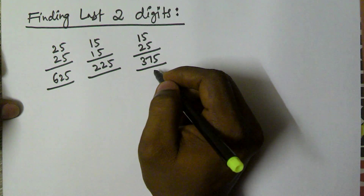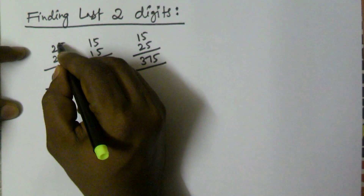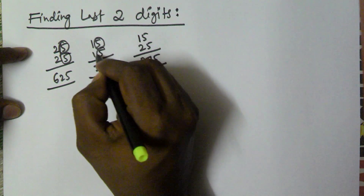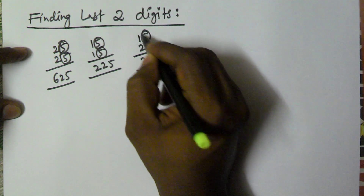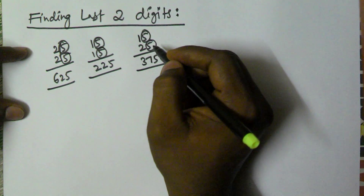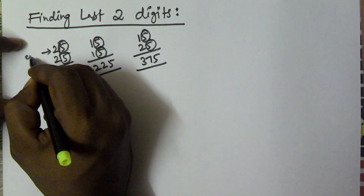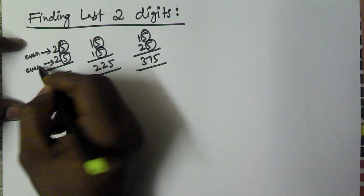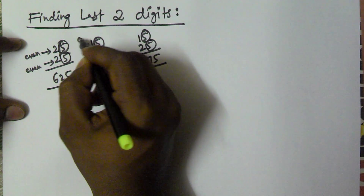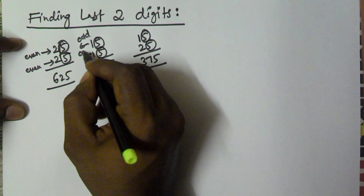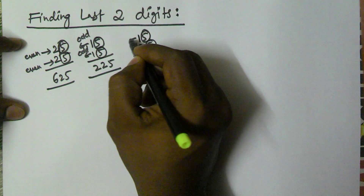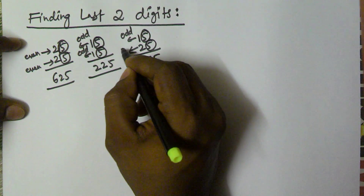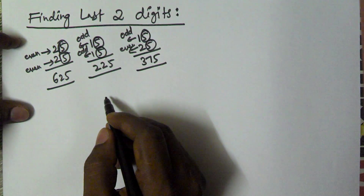What I am trying to tell here is: both numbers are ending with 5. Here this 2 is an even number and this 2 is an even number. Here 1 is an odd number, here also 1 is an odd number, here 1 is an odd number and here 2 is an even number.